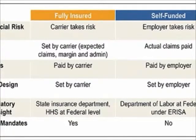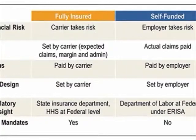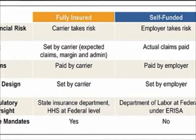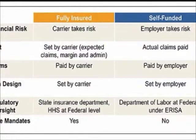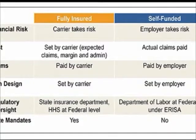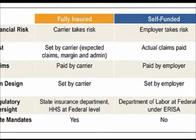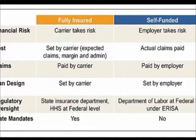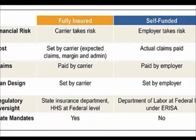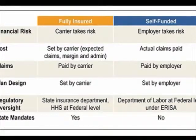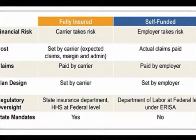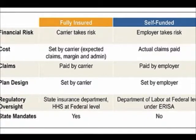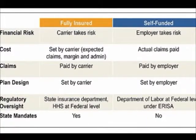The basic difference between fully insured and self-funded plans is that in fully insured plans, costs are set by the carrier — covering claims, margin, and administration. In self-insurance, actual claims are paid retrospectively. For fully insured plans, claims are paid by the carrier, while in self-insured plans, employers contract with third-party administrators and pay claim amounts directly. Plan design is set by the insurance company for fully insured plans and by employers themselves for self-insured plans.